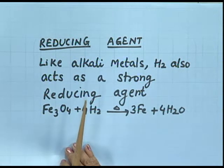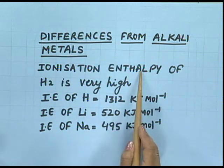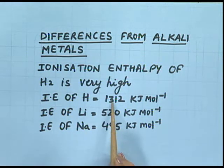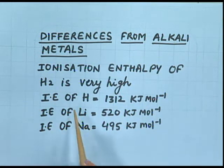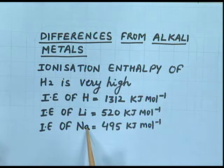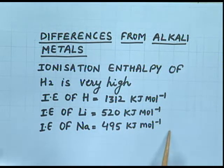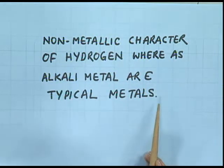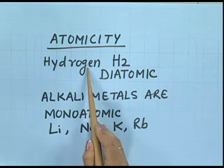We have seen many points of resemblance between hydrogen and alkali metals, but in some points it also differs from alkali metals. Ionization enthalpy of hydrogen is very high — its ionization enthalpy is 1312 kJ/mol, whereas lithium is 520 kJ/mol and sodium is 495 kJ/mol. The values differ greatly. Hydrogen also has a non-metallic character, whereas alkali metals are typical metals — hydrogen is a gas while alkali metals are solids. Regarding atomicity, hydrogen is diatomic while alkali metals are monoatomic.